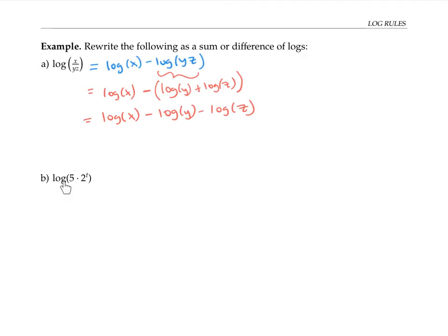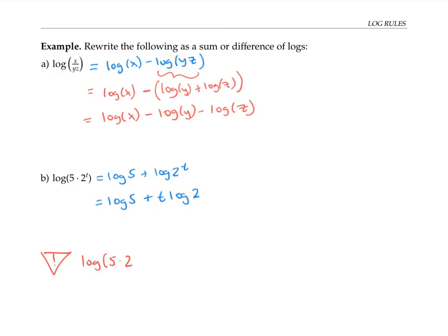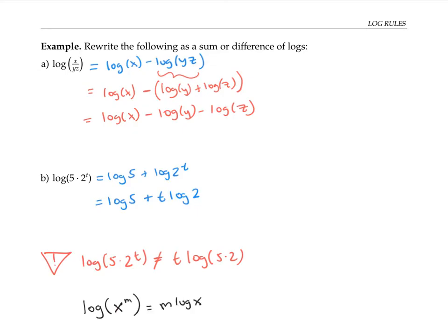In my next expression, I have the log of a product, so I can rewrite that as the sum of two logs. I can also use my power rule to bring down the exponent t and multiply it in the front, giving me the final expression: log of five plus t times log of two. One common mistake on this problem is to rewrite this expression as t times log of five times two. In fact, those two expressions are not equal, because the t only applies to the two, not to the whole five times two — the power rule only applies to a single expression raised to an exponent, not to a product like this.